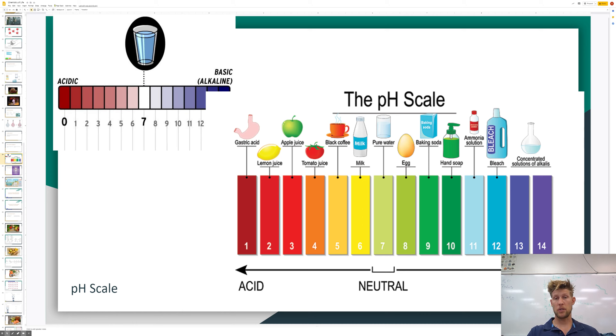Now baking soda is a nine. So if you're struggling with acid reflux, you have heartburn, taking some baking soda would be actually kind of good because it'll balance out that low pH.